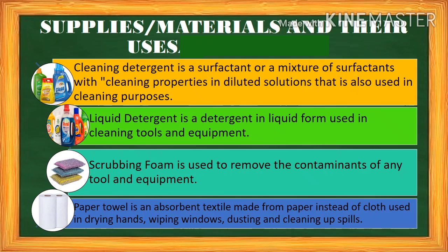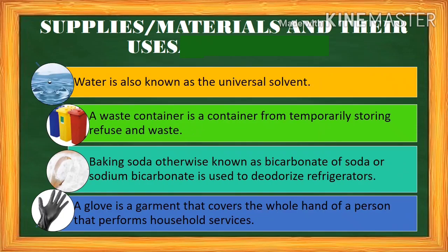Next, scrubbing foam is used to remove contaminants from any tool and equipment. Paper towel is an absorbent textile made from paper instead of cloth, used in drying hands, wiping windows, dusting, and cleaning up spills. Next is water, also known as the universal solvent — the most commonly used medium for cleaning and rinsing. Housekeeping staff needs to use only soft water because hard water cannot dilute detergents properly. Next is a waste container, used for temporarily storing refuse and waste.